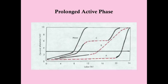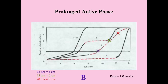Looking at the graph again, which curve is prolonged active phase? The answer is B. The active phase is progressing, but too slowly. For example, at 15 hours she's 3 centimeters dilated, at 18 hours she's 6 centimeters, and at 20 hours she's 8 centimeters — that's a rate of one centimeter per hour, which is too slow.